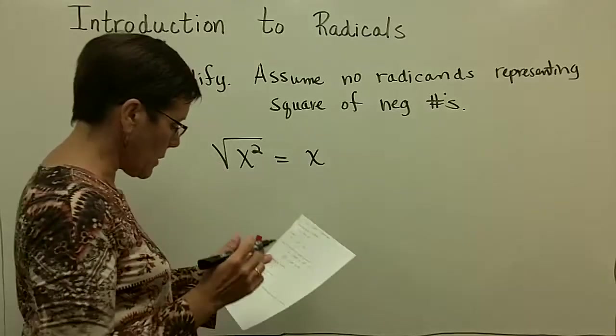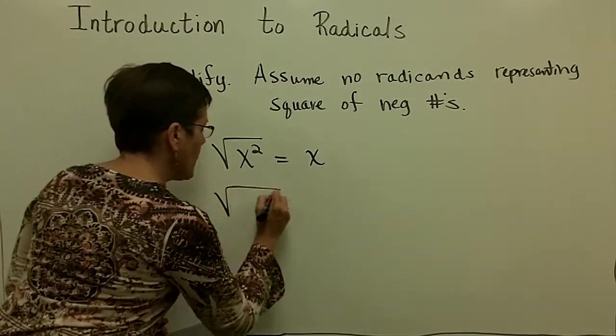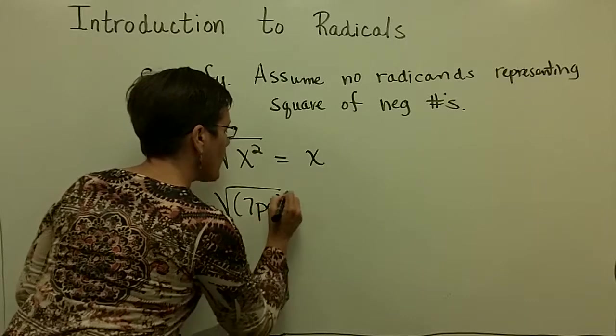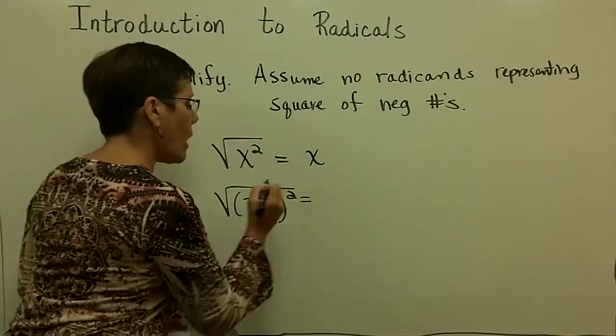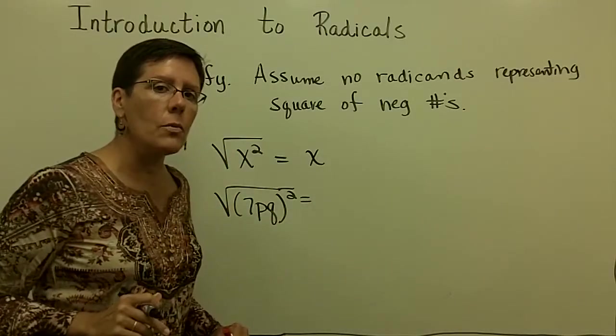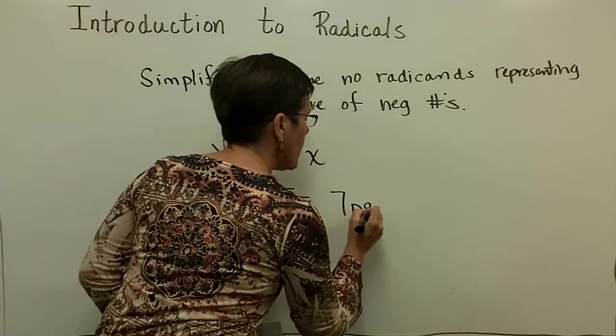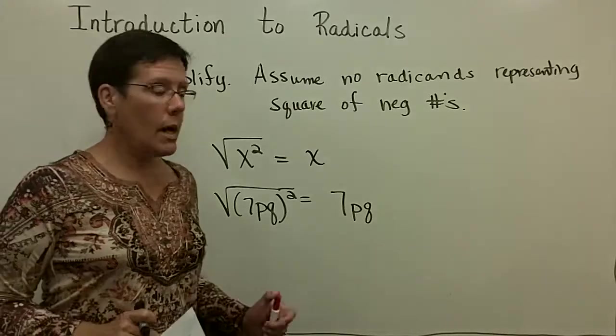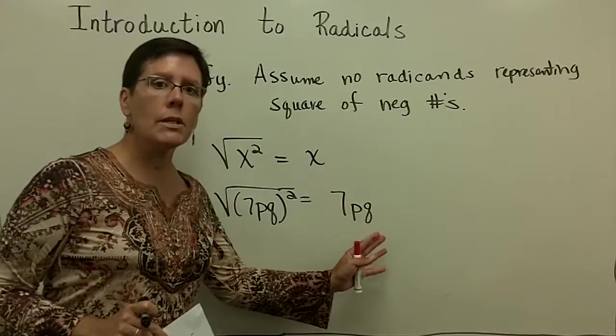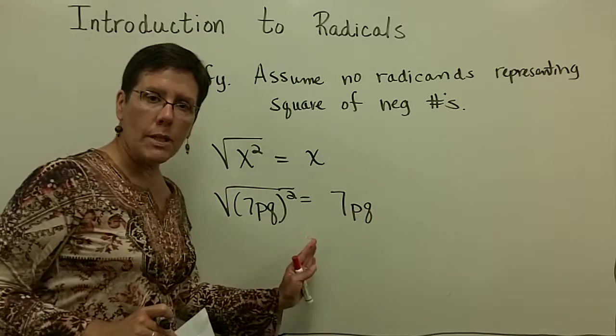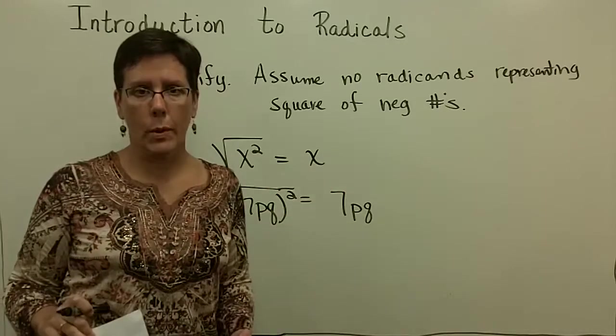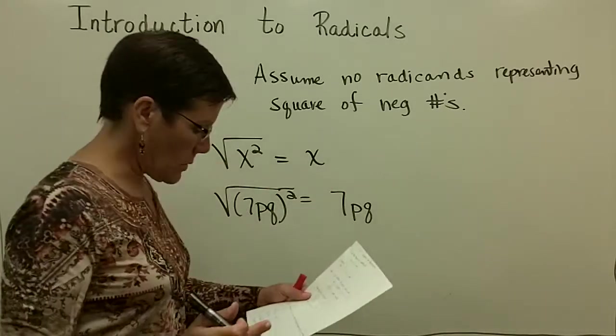Let's simplify 7pq, that quantity squared, all under the radical. Be careful, that's all under the radical. And so my results for this would be 7pq, because 7pq times 7pq is 7pq, that quantity squared. So I've taken the square roots of these.